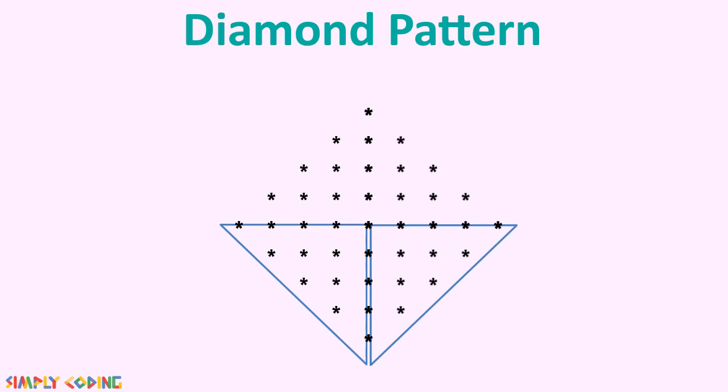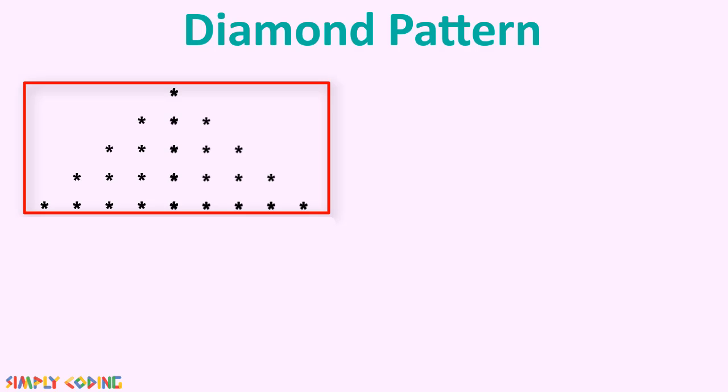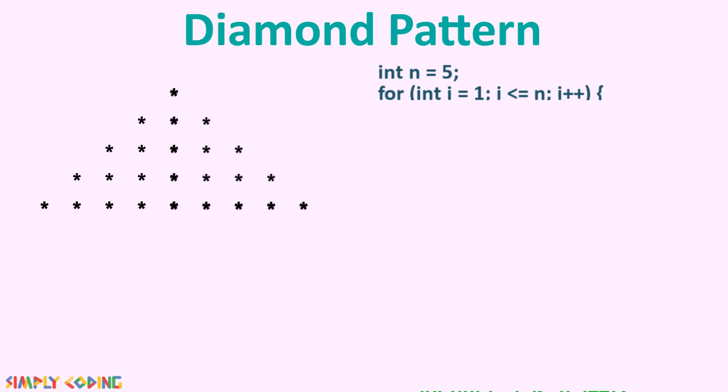So let's start with the top half. We first write the outer loop which runs from 1 to n, as there is no change in number of rows. Then we bring in one j loop for a decreasing triangle of space, then two increasing triangles of star.